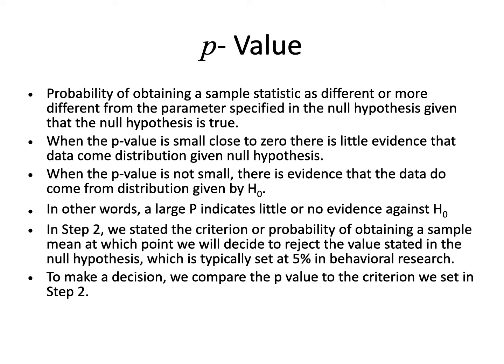We can also take the decision on the basis of the p-value. The p-value is the probability of obtaining a sample statistic as different or more different from the parameter specified in the null hypothesis, given that the null hypothesis is true. When the p-value is small or close to zero, there is little evidence that the data come from the distribution given in the null hypothesis. When the p-value is not small, there is evidence that the data do come from the distribution given by the null hypothesis. A larger p-value indicates little or no evidence against the null hypothesis.